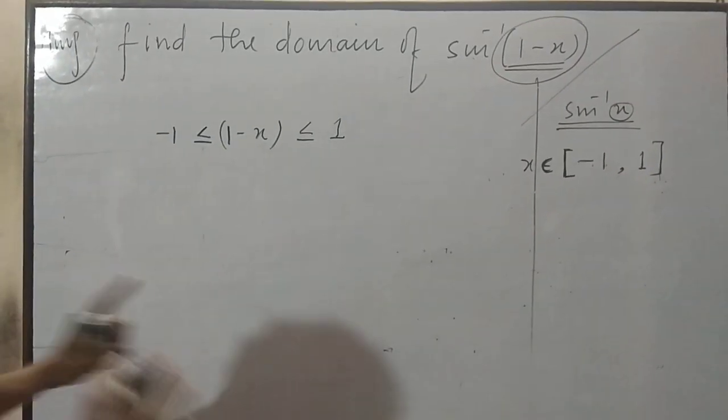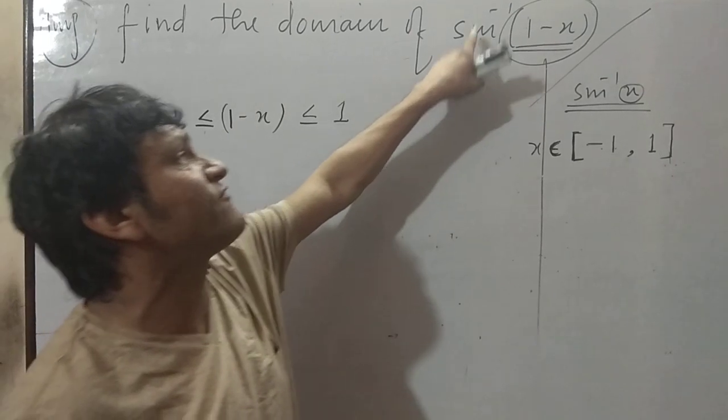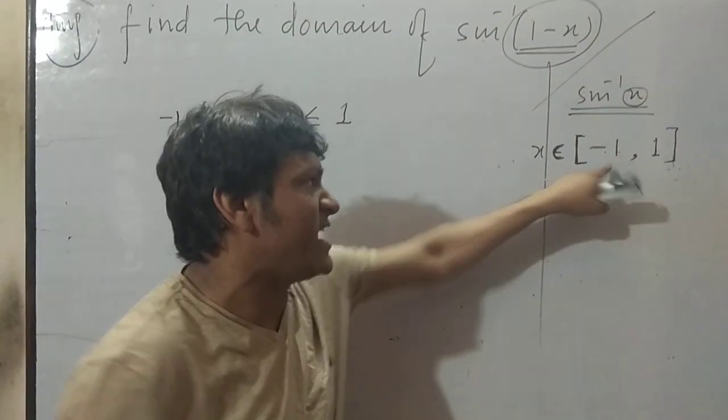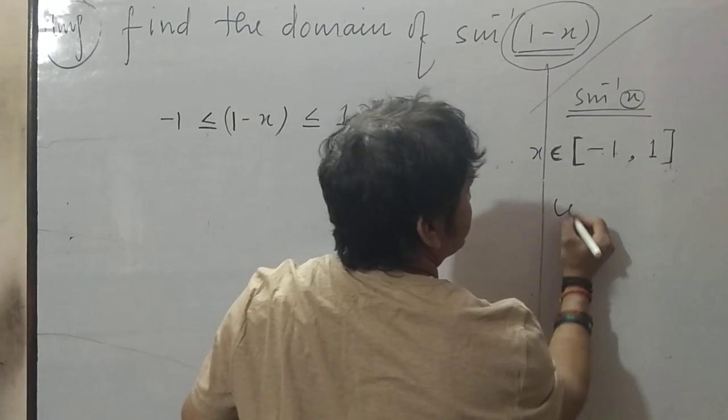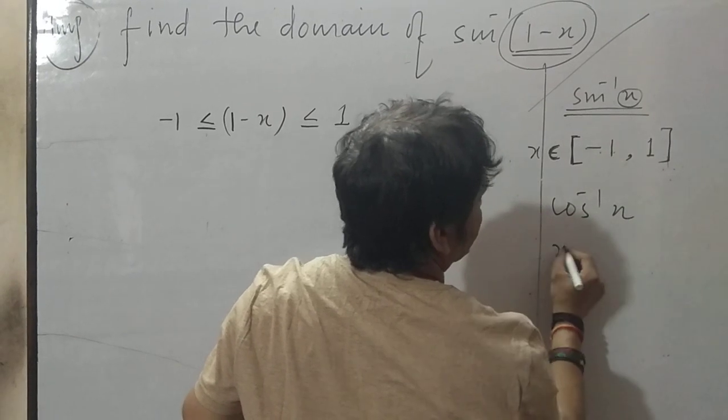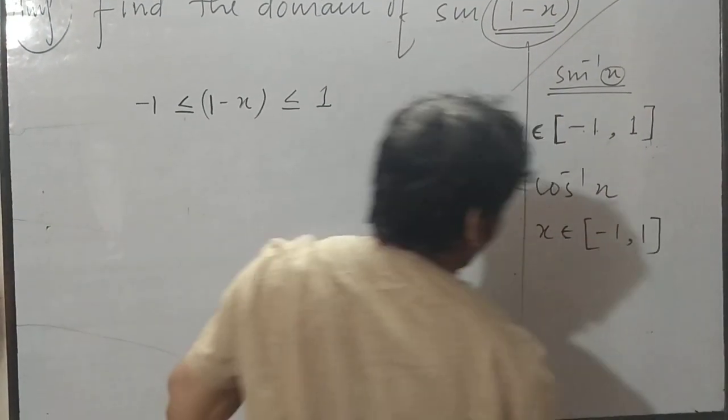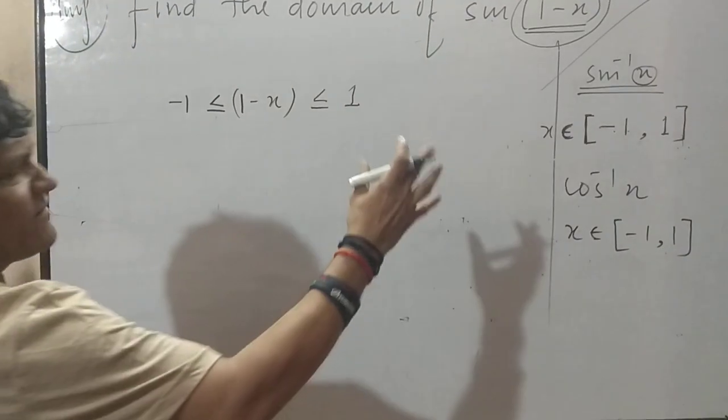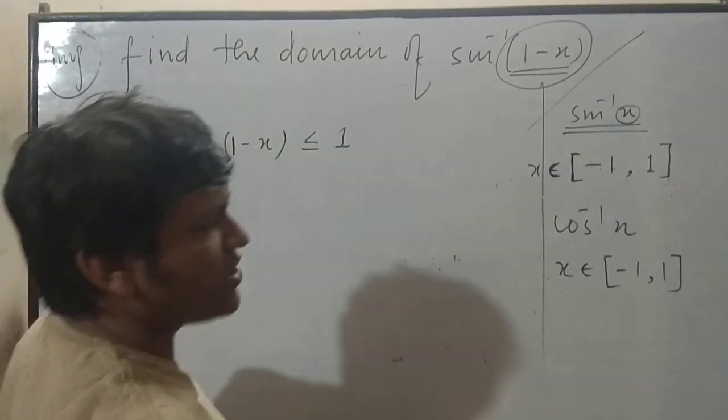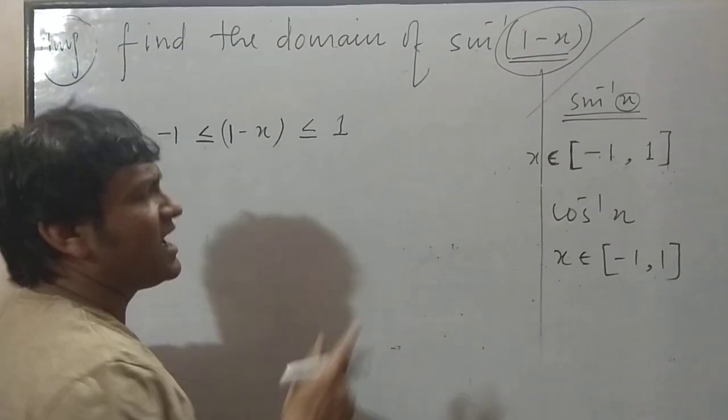Whenever question comes of sin inverse, suppose question comes of cos inverse, then also the same. Sin inverse x is this, cos inverse x also domain will be x belongs to minus 1 comma 1. Question will never come in the form of tan and cot, because tan and cot domain is always R.